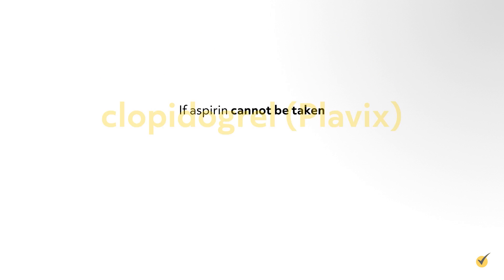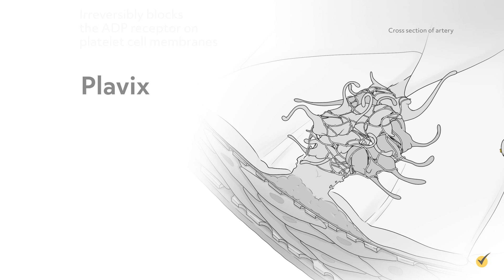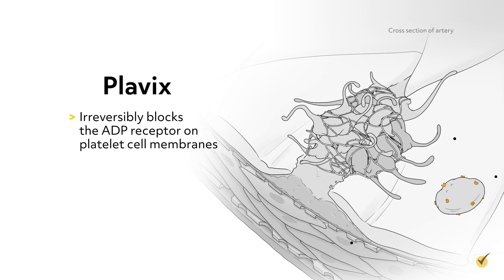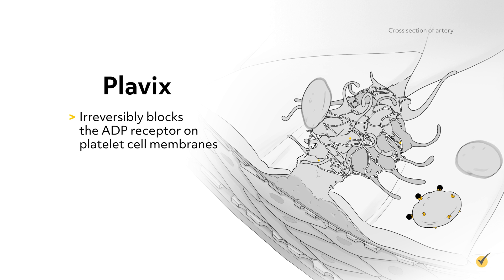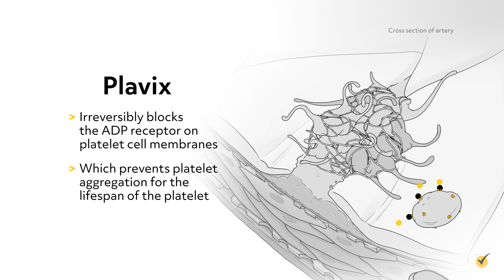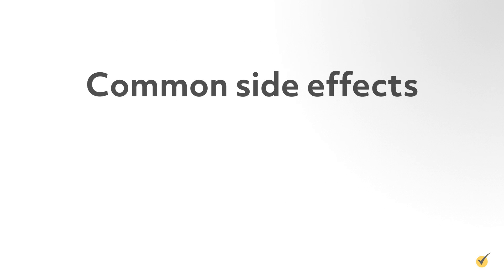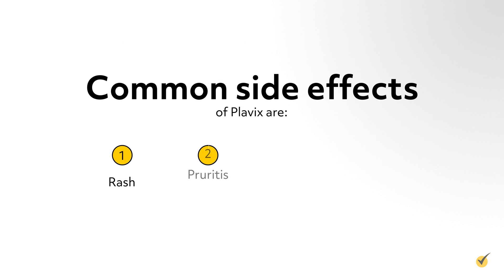If aspirin cannot be taken, clopidogrel, or Plavix, can be given daily. Plavix irreversibly blocks the ADP receptor on platelet cell membranes, which prevents platelet aggregation for the lifespan of the platelet. It is given for MI, stroke, and vascular death from plaque buildup. The most common side effects are rash, pruritus, purpura, and diarrhea.